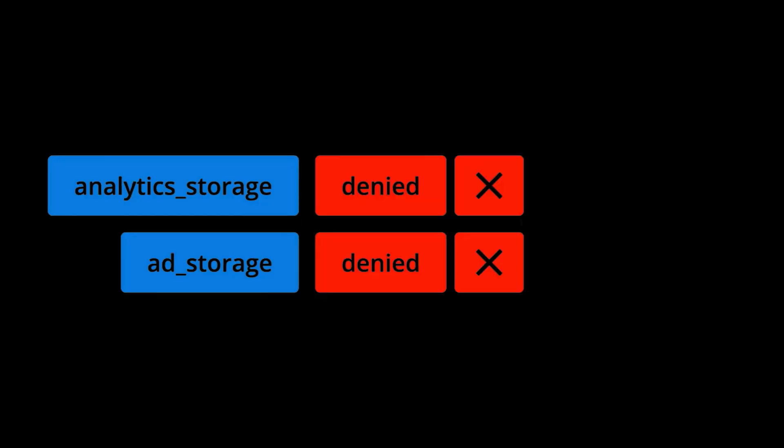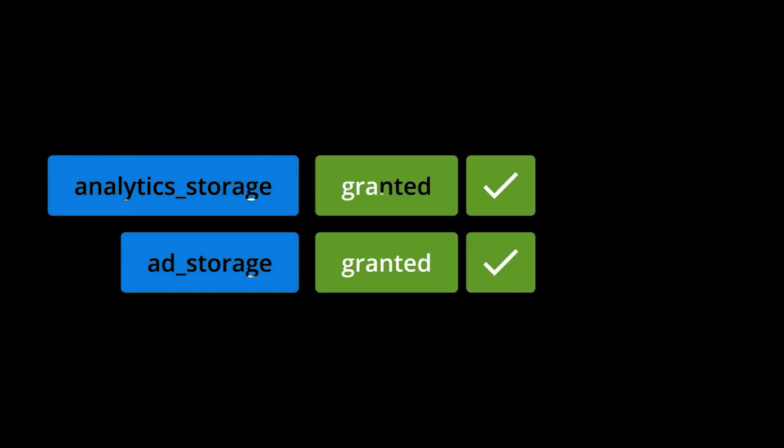When consent mode was first introduced, it let you tell Google if people had provided consent to store analytics and advertising cookies in their browser. To do this, we could set values for the analytics_storage and ad_storage parameters. For example, when someone came to our website, we would set the default consent state to denied. And when they granted permission for cookies to be stored, we would change the value of these parameters to granted. The values of denied and granted are then included with data that is sent to Google.